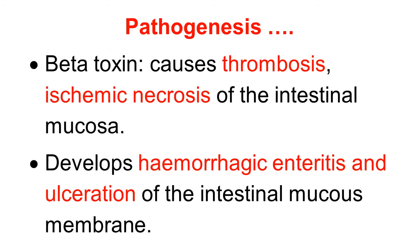Beta toxin causes thrombosis in the vasculature of the intestine, and when there is thrombosis there is ischemic necrosis of the intestinal wall. This develops into hemorrhagic enteritis with serious consequences, including ulceration of the intestinal mucous membrane, severe bleeding in the intestine, and inflammation of the intestinal wall.